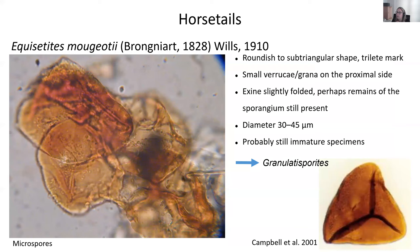Sometimes the spores are immature, and sometimes part of the sporangia is still attached. But we can extract them, study them, describe them as if we were in the dispersed pollen record, and then compare them. In this case, we have a roundish sub-triangular spore with a trilete mark. It has small verrucae on top, especially on the proximal side. They are relatively small, 30 to 45 microns in diameter, and are probably mostly immature specimens because we see part of the sporangia still attached. If we were to determine them in the dispersed pollen record, we would assign them to Granulatis sporidae.